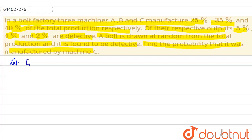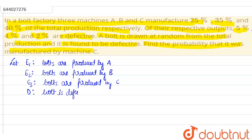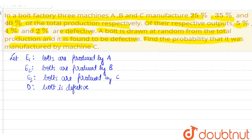To begin with, we will bifurcate the cases. Let E1 be the event that bolts are produced by A. Let E2 be the event that bolts are produced by B. Let E3 be the event that bolts are produced by C. And let D be the event that the given bolt is defective.